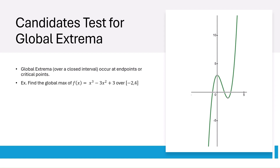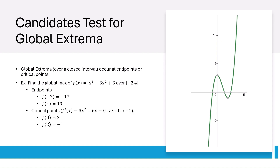Global extrema only occur at endpoints or critical points, but you need to check both. For example, to find the global max of f of x equals x cubed minus 3x squared plus 3 over the interval from negative 2 to 4, we check the endpoints: f of negative 2 is negative 17 and f of 4 is 19. Then we check the critical points by setting the first derivative equal to 0. After comparing all endpoints and critical points, we find that the global max is at x equals 4 because f of 4 is 19, which is higher than all other values.